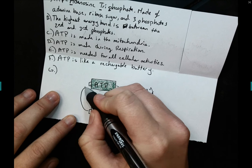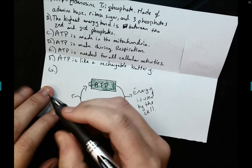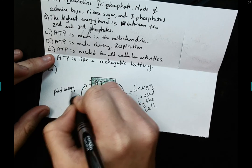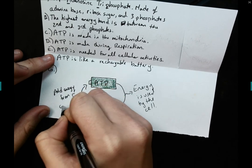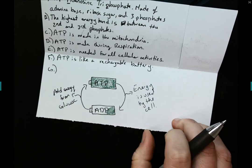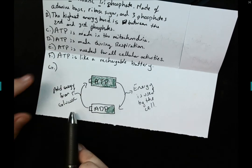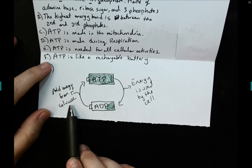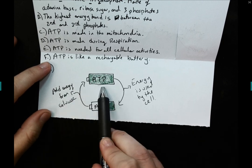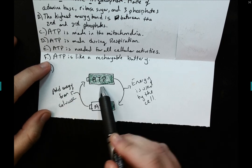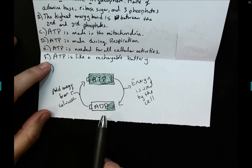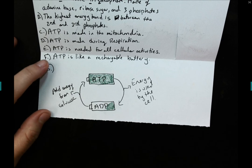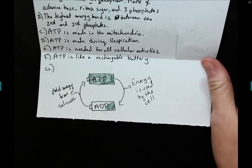But we can recharge that battery. We can add energy from glucose through cellular respiration. I can eat food that contains glucose, and through cellular respiration we can make ATP energy. Then when we use the energy again, battery gets low. And thus the cycle continues over and over again.